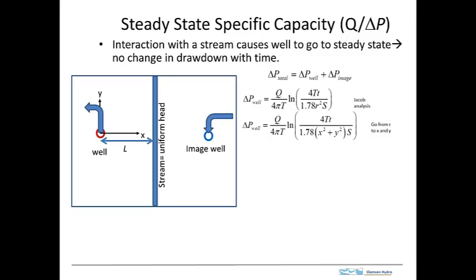The specific capacity of a well is the pumping rate Q divided by the drawdown. During a transient test, this ratio is constantly changing: if we hold the pumping rate constant, the drawdown keeps increasing, so the specific capacity decreases. But if we have a shallow well and pump it for a while, the drawdown tends to stabilize and the well reaches steady state, at which point the specific capacity reaches a constant value.